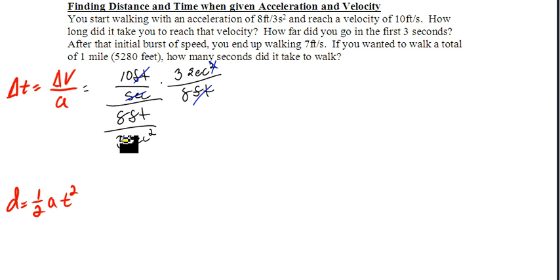Seconds cancel out with one of the two there. When I multiply across, I'm going to be left with 30 seconds all over 8. And 30 divided by 8 is 3.75 seconds.